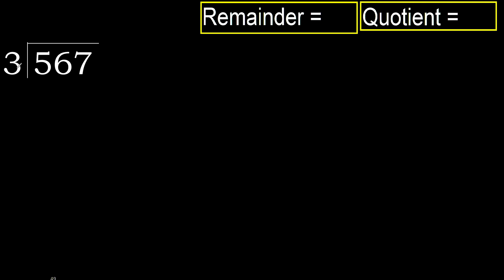567 divided by 3. 5 is not less, therefore start with 5. 3.